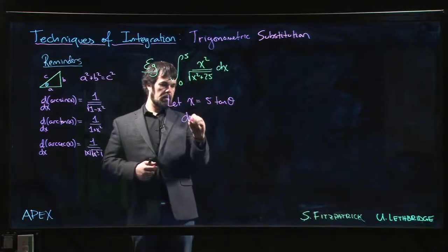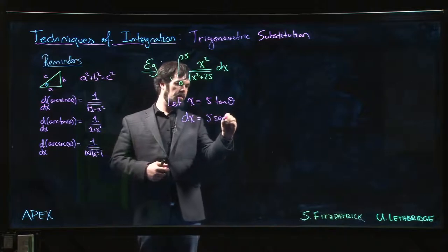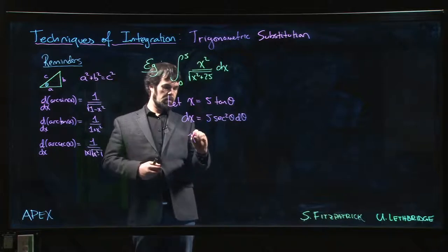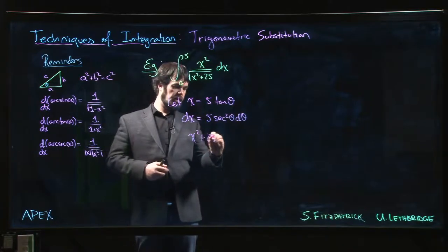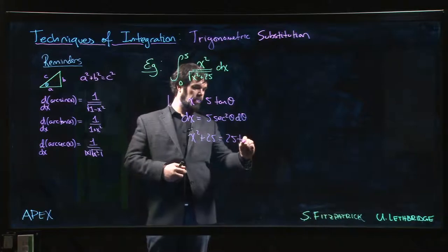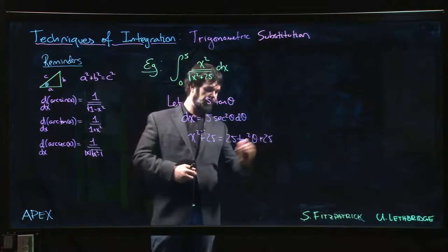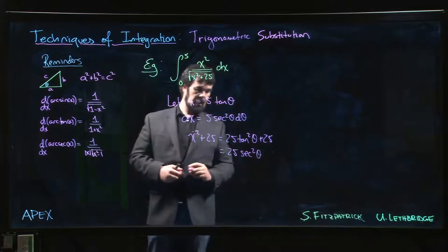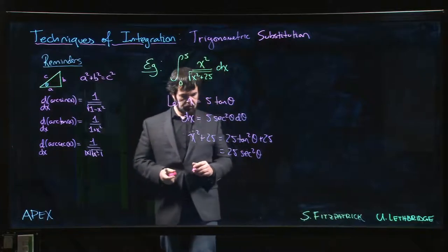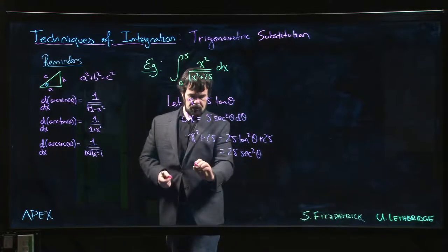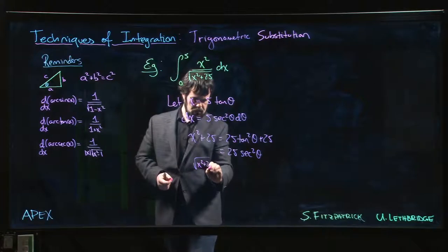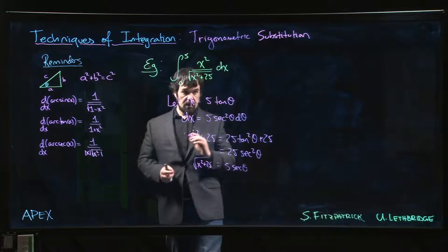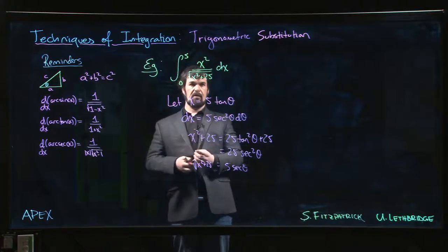So dx becomes 5 secant squared theta d theta. And if I do x squared plus 25, that becomes 25 tan squared theta plus 25, which is 25 secant squared theta. So if I take the square root, I'm going to get 5 secant theta. But we also have to deal with the limits.